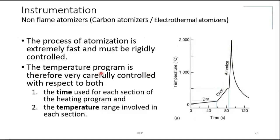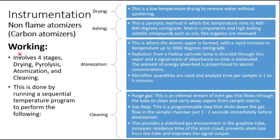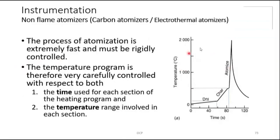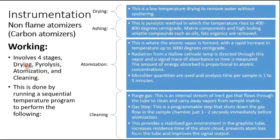The temperature program is therefore very carefully controlled with respect to both the time used for each section of the heating program and the temperature range involved in each section. The instrumentation involves four stages: drying, then pyrolysis (converting to ash), then atomization, and after atomization, cleaning whatever residue remains in the cylinder.